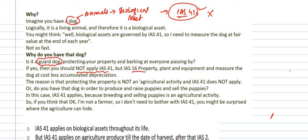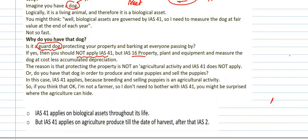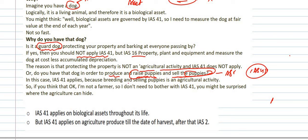However, if the dogs are kept to breed and sell puppies, then you are producing additional biological assets from that asset, and there is biological transformation — agricultural activity exists. In that case, you treat the asset under IAS 41. If there is no agricultural activity, you do not apply IAS 41.